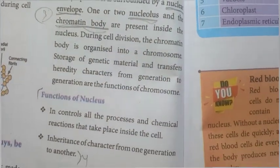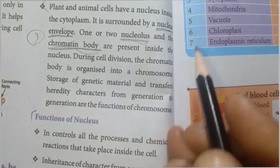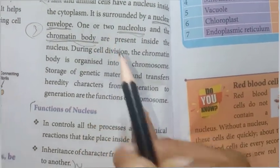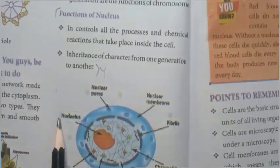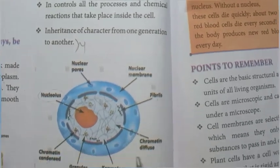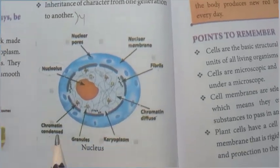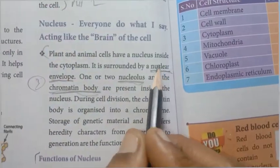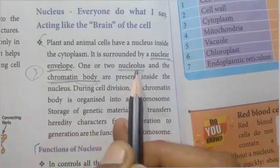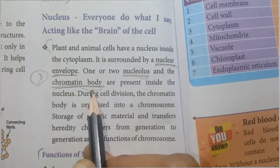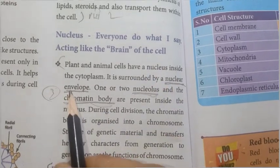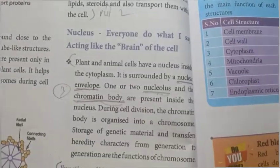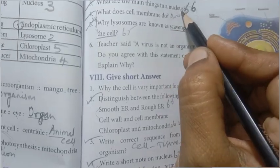So the main things in the nucleus are: nuclear envelope, nucleolus, and chromatin body.